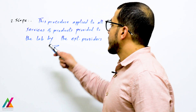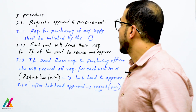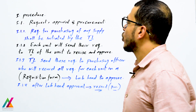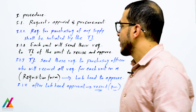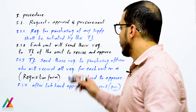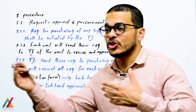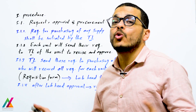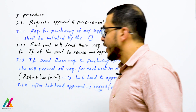The scope of this procedure applies to all products and services provided to the lab by an external provider. The first procedural step is request, approval, and procurement. Requirements for purchasing any supply are initiated by the technical lead for each unit, who revises and approves them, then sends them to the purchasing officer. The purchasing officer collects all requirements from each unit, prepares an acquisition form, and sends it to the lab head for approval before further processing.